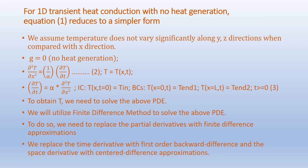For 1D transient heat conduction with no heat generation, the general equation reduces to a simpler form. We assume temperature does not vary significantly along y and z directions compared to the x direction, and the heat generation term g equals zero. Accordingly we get: ∂²T/∂x² = (1/α)(∂T/∂t), where T is a function of x and time t. This is rearranged as: ∂T/∂t = α(∂²T/∂x²).